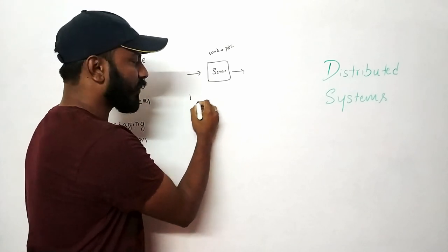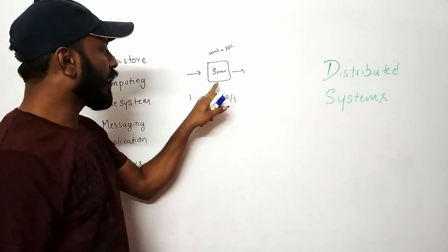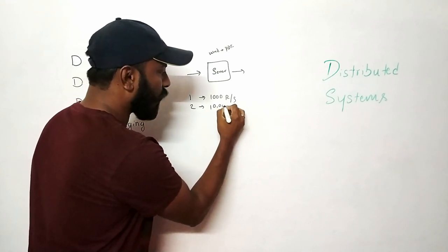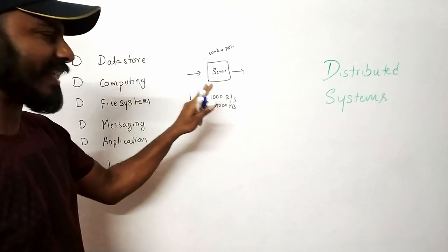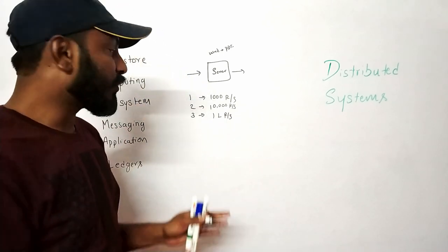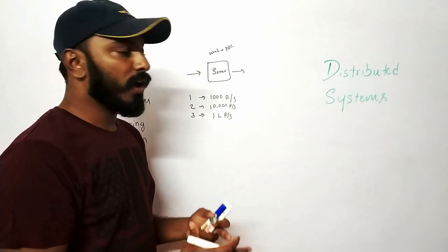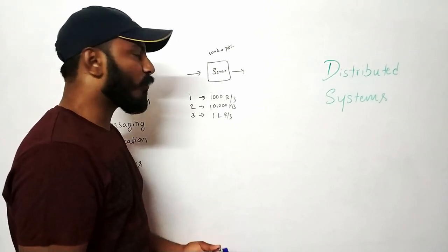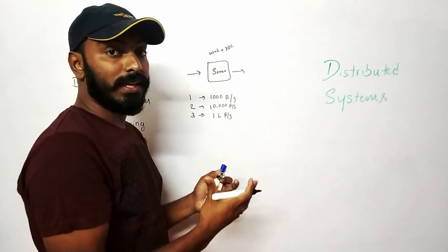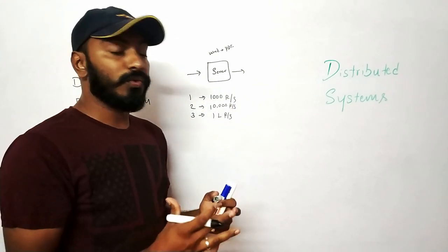On the first month you're getting about 1,000 requests per second — this is fine, the server can easily handle it. On the second month it started to see about 10,000 requests per second — still manageable. But on the third month it saw about 1,000,000 requests per second and users are complaining that the server is taking more time to convert Word to PDF, degrading the user experience. You'll think the capability of this server is being overused and you need to upgrade it to handle this much traffic.